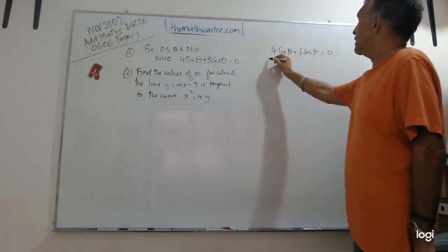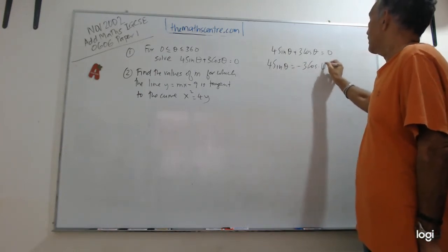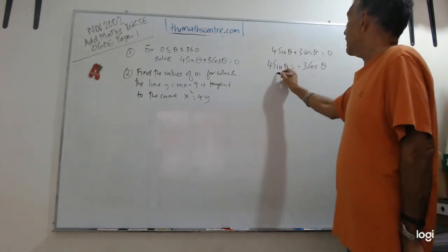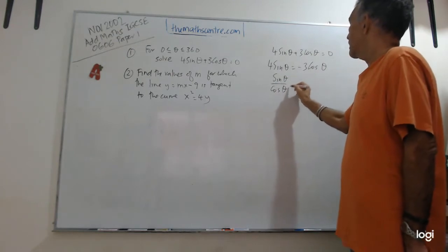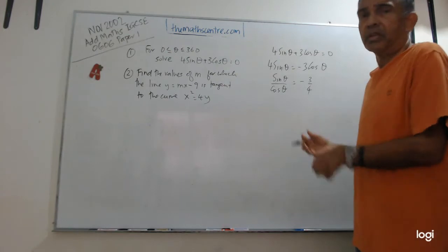Let's go ahead and clean this up a little bit. 4 sin theta equals minus 3 cos theta. I just brought the 3 cos theta to the right-hand side. Then let me rearrange this. I have sin theta over cos theta, which will equal minus 3 over 4. Minor algebra, just shifting it around.